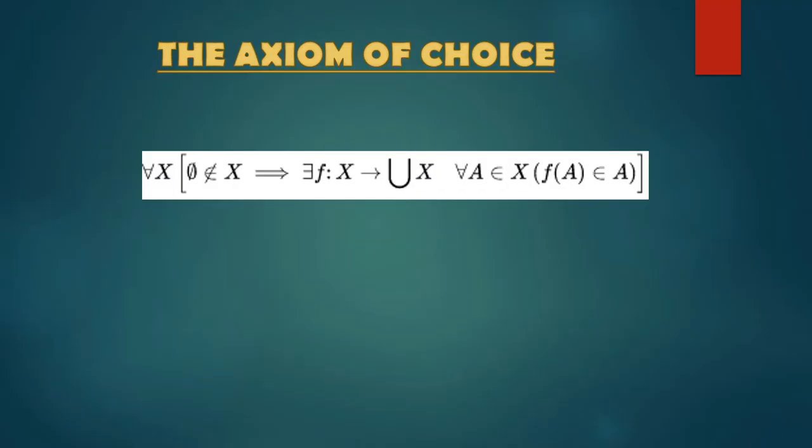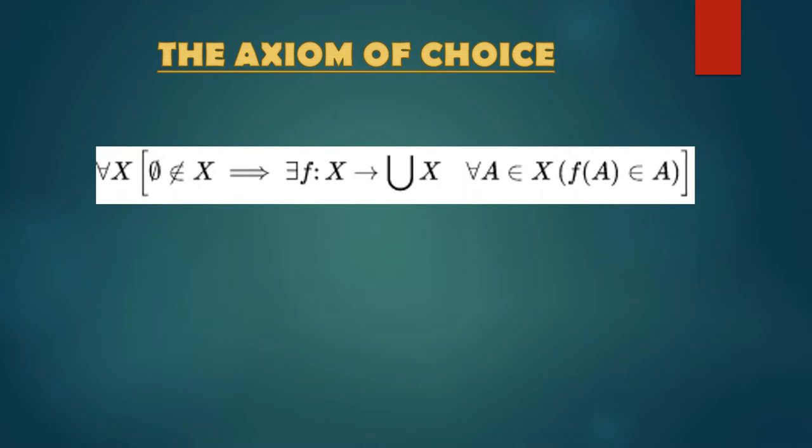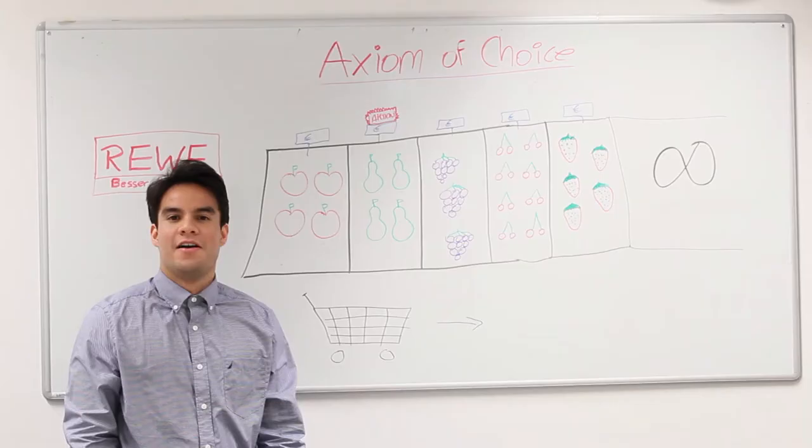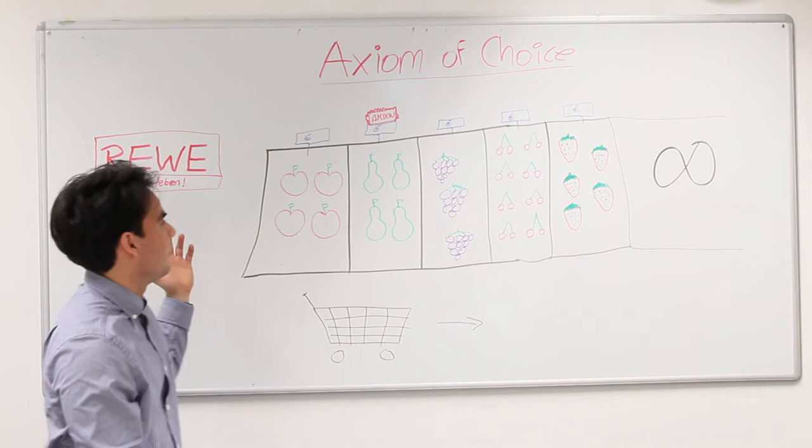The axiom of choice states that for any set of infinite non-empty sets, we can create a new set that contains one element of each set. So now that you have seen the complicated formula, we would like to present you an easier example of the axiom of choice.